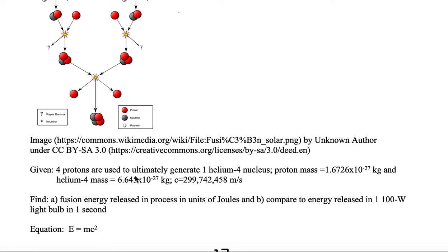We're given four protons that are ultimately used to generate one helium-4 nucleus and we know that each proton mass is 1.6726 times 10 to the minus 27 kilograms and one helium-4 mass is 6.645 times 10 to the minus 27 kilograms. We're also given the speed of light is exactly equal to 299,742,458 meters per second.